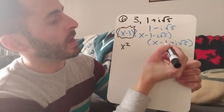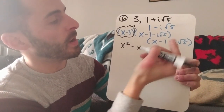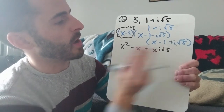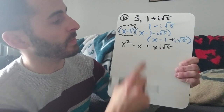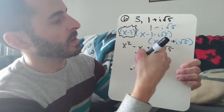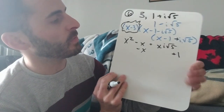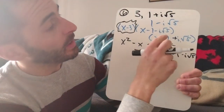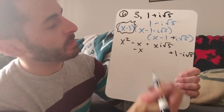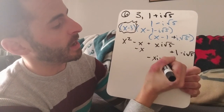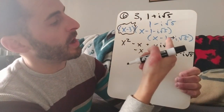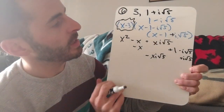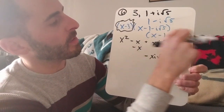x times x is x squared. x times negative 1 is negative x, and x times positive i√5 is xi√5. Next line — lining up like terms — negative 1 times x is negative x, negative 1 times negative 1 is positive 1, and negative 1 times i√5 is negative i√5. Third line: negative i√5 times x is negative xi√5 — hey, those are friends! Negative i√5 times negative 1 is positive i√5. And then finally, negative i√5 times i√5.